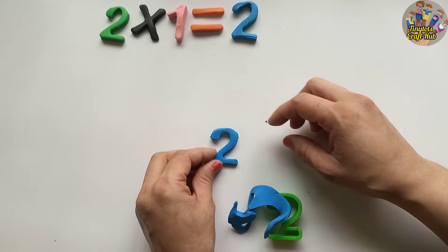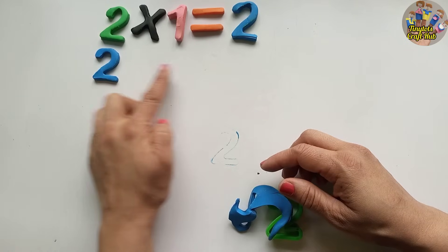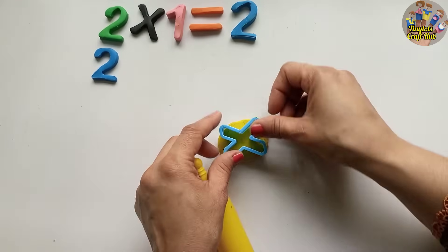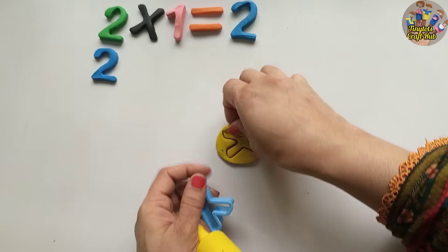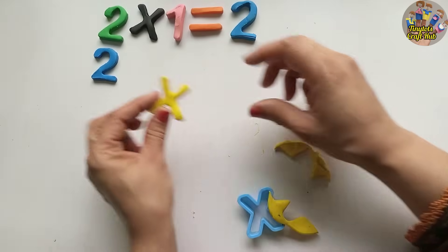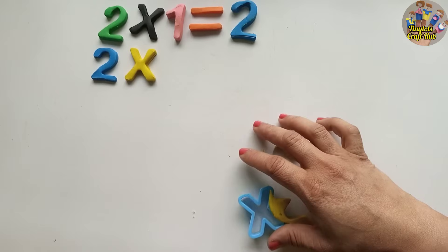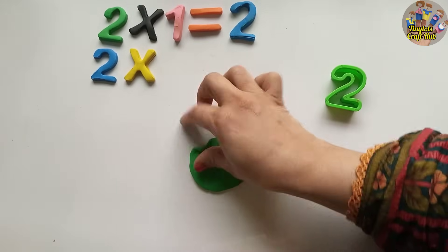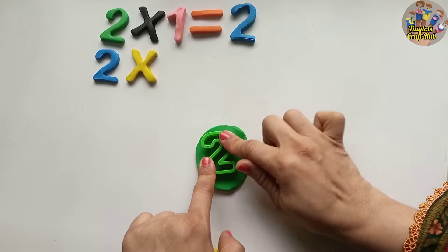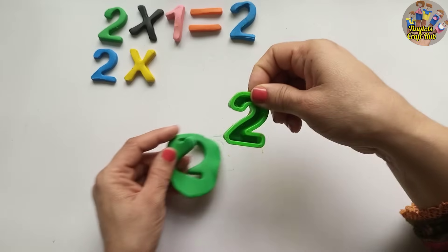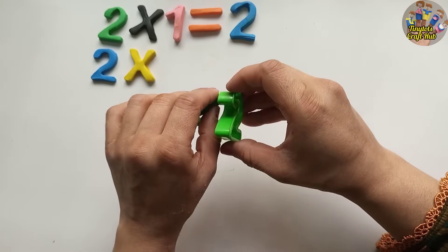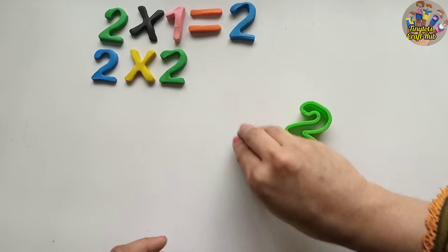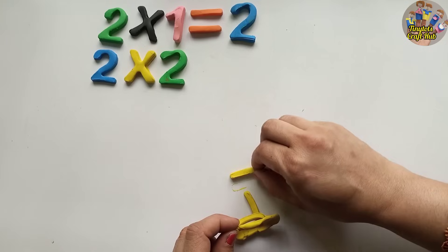Now I am going to solve the next part of the table. We will make two with play-doh again and put it there, along with the multiplication sign. Do you know what comes after one? Two! Yes. So after putting the multiplication sign, I am going to put two here for the second equation. This is the process of repeated addition — we add again and again.